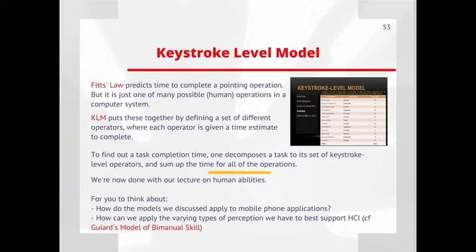We saw that again in the Fitts' Law group who presented Giard's Model of Bimanual Skill, saying that we have basically one primary hand which we use to do fine motor control. We might write with one hand and we might use our secondary hand to support or frame the reference for our primary hand to work.